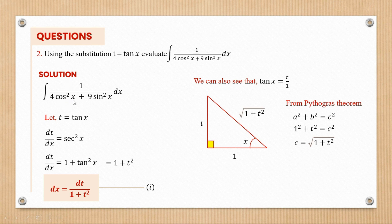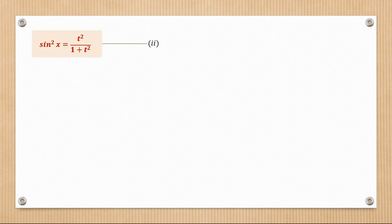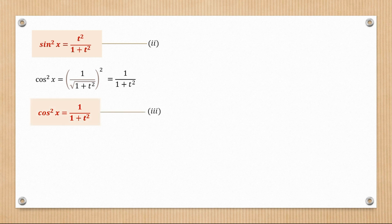Now we need to find what cos squared x and sine squared x represent. Sine x is opposite over hypotenuse, so sin x equals t over root of 1 plus t squared. Cos x is adjacent over hypotenuse, so cos x equals 1 over root of 1 plus t squared. Therefore sin squared x equals t squared over 1 plus t squared, and cos squared x equals 1 over 1 plus t squared.